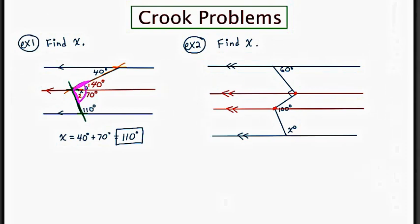We have a right angle over here as indicated by the little box. When I draw this red line, it divides that right angle — not necessarily in half. I'll call the upper portion one and the lower portion two. This angle marked 100 is also being split; I'll call one portion three and the other portion four. There are twice as many divided angles because there are twice as many crooks.